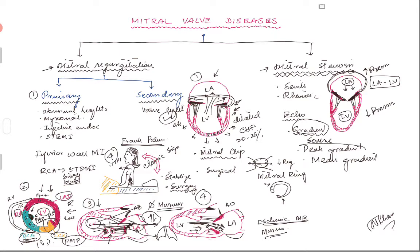There can be a peak gradient - the maximum gradient reached at a certain point in the cardiac cycle - or a mean gradient, which averages the LA-LV pressure difference over the entire cardiac cycle. When reviewing an echo report, focus on the mean gradient. A mean gradient of 10 or 15 indicates severe mitral stenosis. In a normal person with a normal valve, there should be no gradient - the pressure in the left atrium should equal the pressure in the left ventricle.